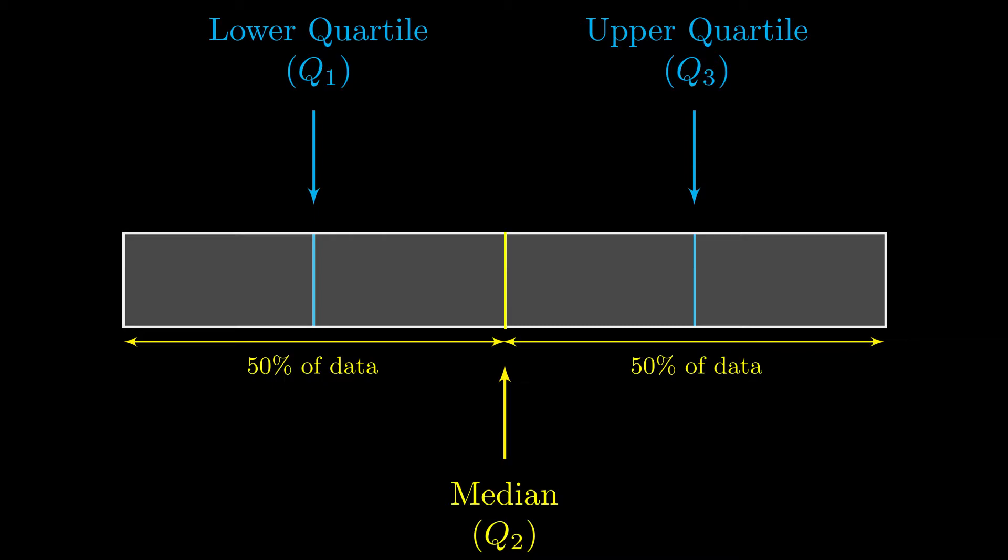The point of these quartiles is they split the data into four equal groups, just like how the median splits you in half, the quartiles split you into quarters. Now what this also gives us is a new measure of spread, because so far we've only seen the range, and the range only looks at the biggest number and the smallest number. So the range is very vulnerable to outliers, very extreme values.